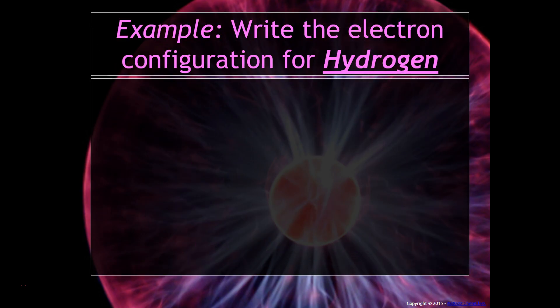For example, if I asked you to write the electron configuration for hydrogen, you first have to count how many electrons hydrogen has. You can obtain that from the periodic table and you see that it's atomic number one, so therefore it has one electron.